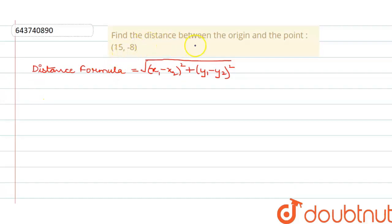So in this question we have to find the distance between the origin and the point 15, minus 8. So basically there are two points and the coordinates of those are one is 15, minus 8 and the other is origin that is 0, 0 and we have to find the distance between the two. So I have already written down the distance formula here.